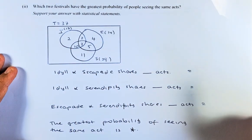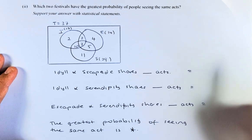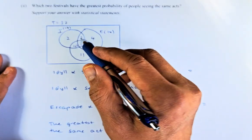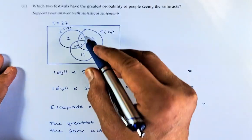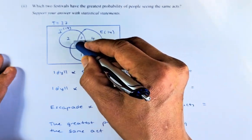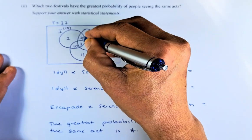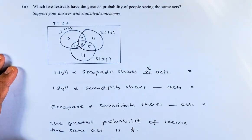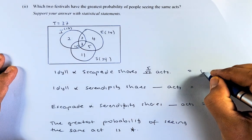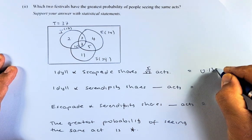Which two festivals have the greatest probability of people seeing the same act? So to look at the same act, we look at Idyll and Escapade first. So there are 5 out of 37 acts. So 2 and 3 is 5. The total is 37. 5 out of 37 is equal to probability of 0.1351.